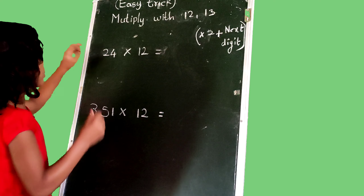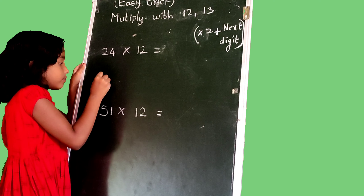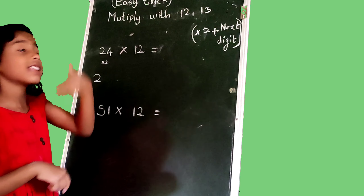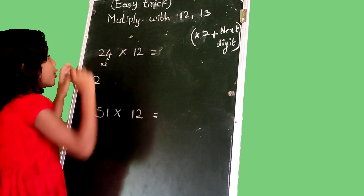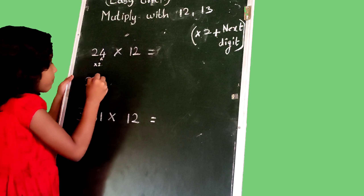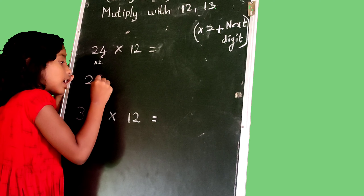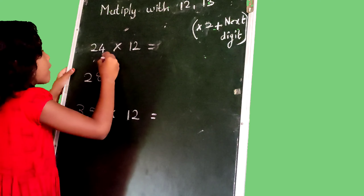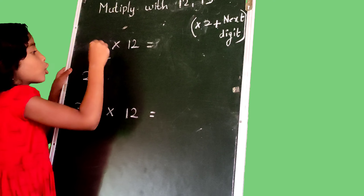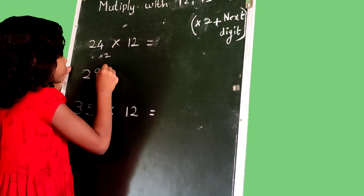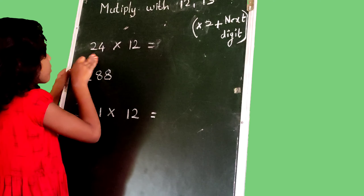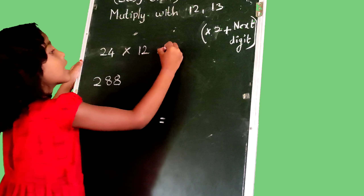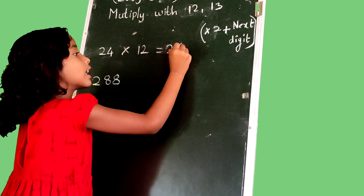We drop 2 as this and we multiply with 2. 2 times 2 is 4, add the next number: 4 plus 4. Then we multiply 4 with 2. Friends, 24 multiply with 12, the answer is 288.